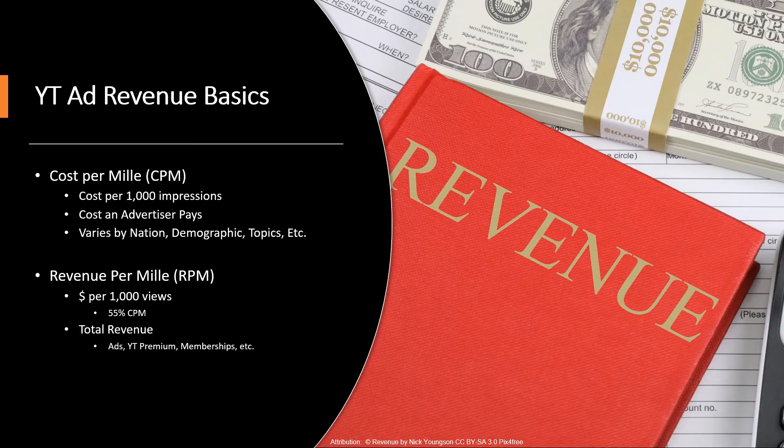So how exactly does ad revenue work on YouTube? Well the first thing to know about is the cost per mil or CPM. This is the cost per 1,000 impressions that an advertiser is willing to pay. This varies greatly by nation, demographics, topics, keywords, etc.